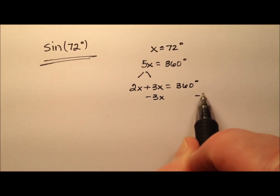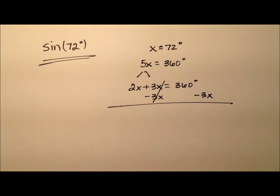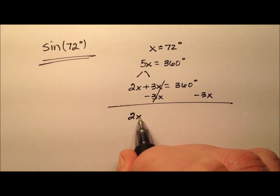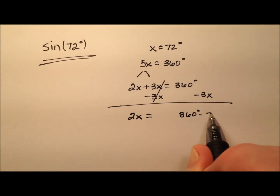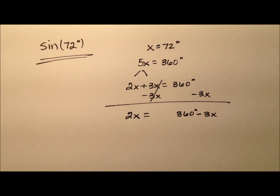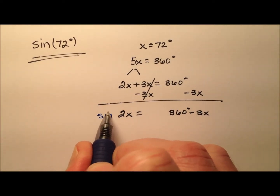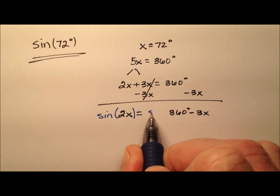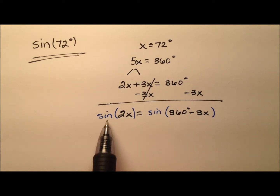Next, I'm going to subtract 3x from both sides, giving me 2x equals 360 degrees minus 3x. So I'm saying these two sides are equal to one another, and now I'm going to take the sine of both sides of the equation. On the left, I have the sine of 2x, which is a double angle identity.